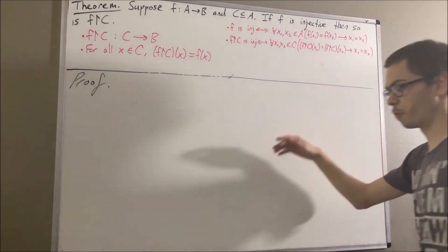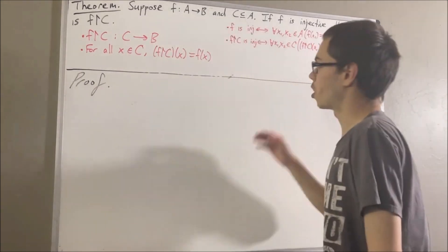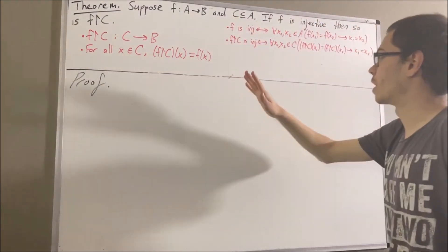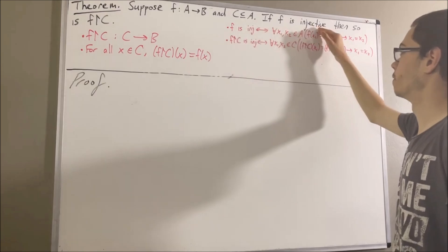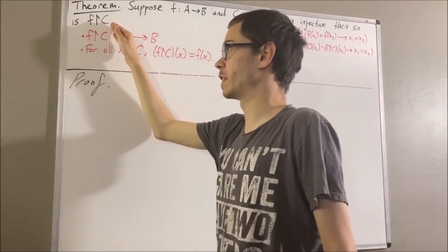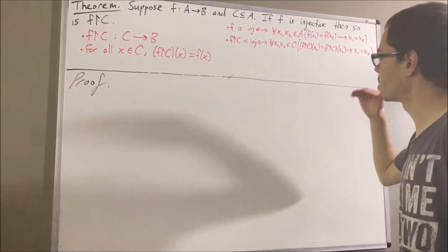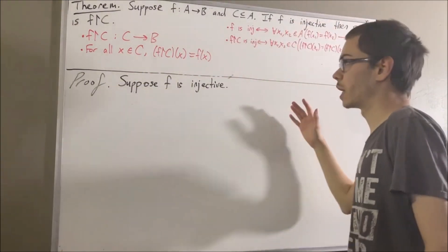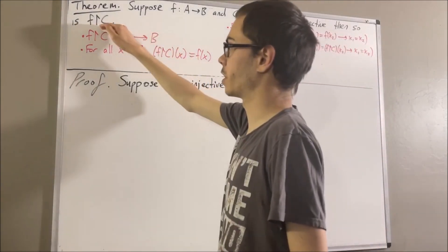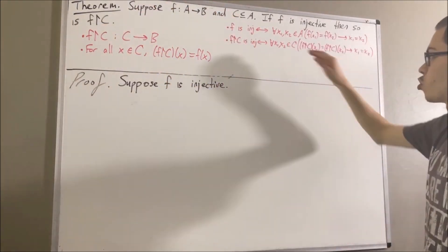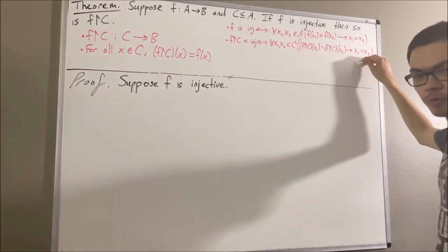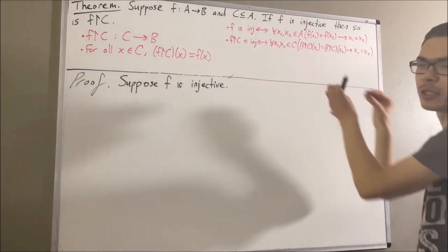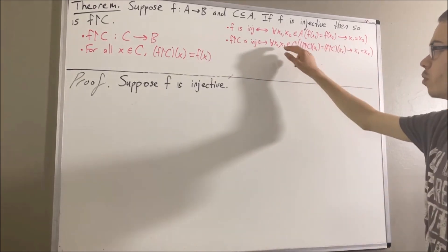Okay, so now let's get into the proof. Let's suppose that we're already given a function f from A to B and C is a subset of A. Our whole goal now is to prove if f is injective, then f restricted to C is injective. So let's suppose that f is injective. Our whole goal now is to prove that f restricted to C is also injective. So give me any two elements in C — I'll call them x1 and x2.